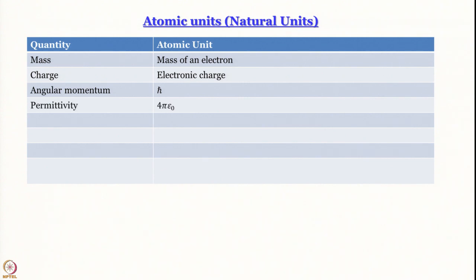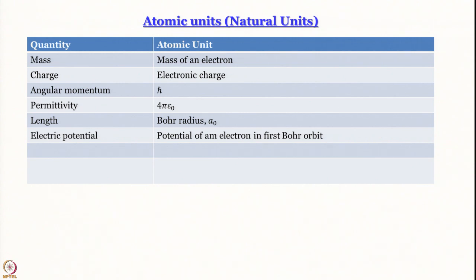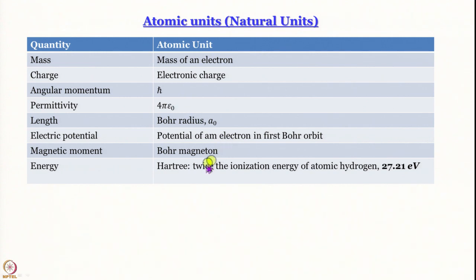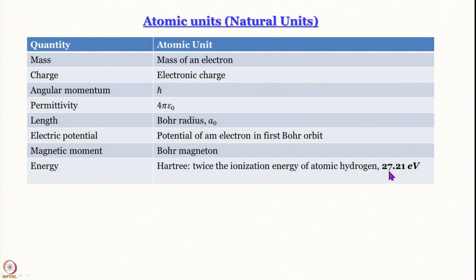Permittivity: we stop writing that annoying 4πε₀, setting it to 1. Length is represented in terms of the Bohr radius. Electric potential is written in terms of the potential of an electron in the first Bohr orbit. Magnetic moment is written in terms of the Bohr magneton — we are not really using it right now. Energy, very importantly, is written in terms of the Hartree. One Hartree is twice the ionization energy of atomic hydrogen: since the ionization energy of atomic hydrogen is 13.605 eV, twice that is 27.21 eV. So 1 Hartree = 27.21 eV, a significant number for atomic systems. When we report atomic energies in atomic units you often see many decimal places, because converting to electron volts can differ by many decimal places.